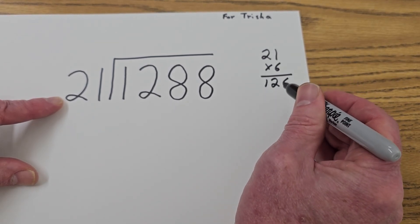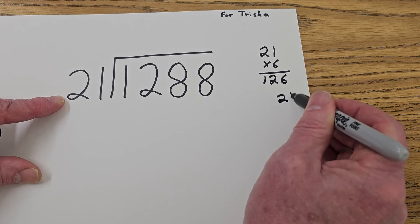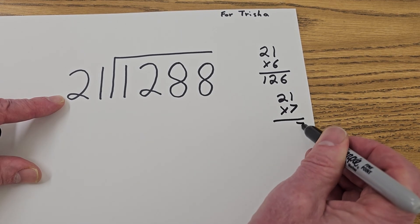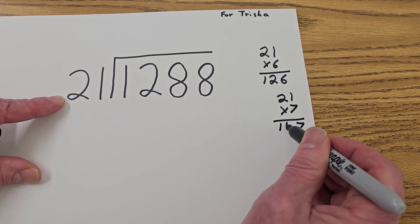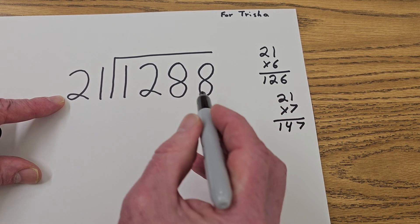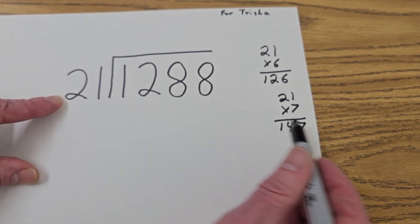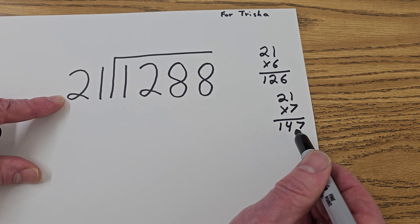I'm going to try 7 just in case. So I'm going to take 21 times 7. 7 times 1 would be 7, and 7 times 2 would be 14. So I definitely could put 126 into 128, and 147 would be just too big.